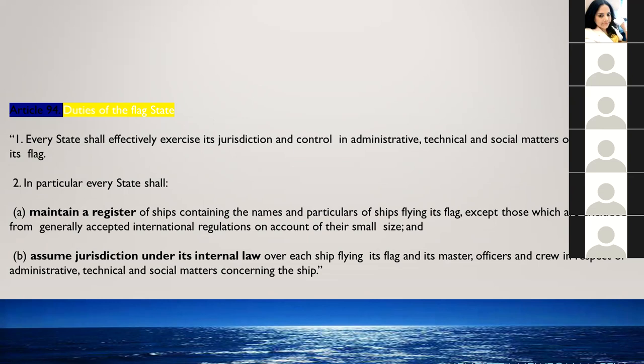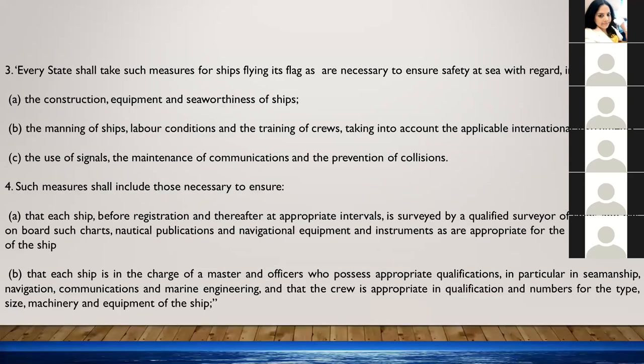Article 94 talks about the duties of the flag state. Every state shall effectively exercise its jurisdiction and control in administrative, technical, and social matters over ships flying its flag. In particular, every state shall maintain a register of ships containing the names and particulars of ships flying its flag, and assume jurisdiction over each ship and its master, officers, and crew in respect of administrative, technical, and social matters.